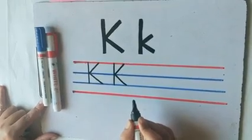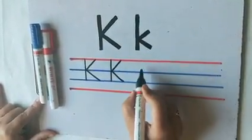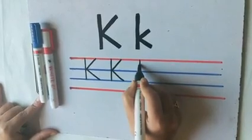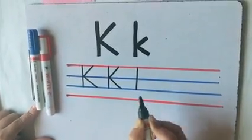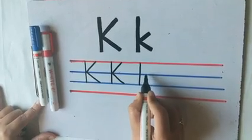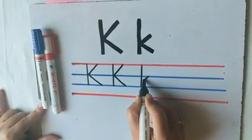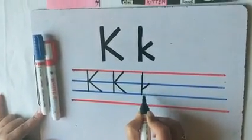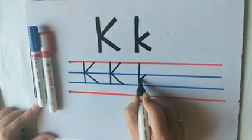Isn't it very easy? Now we will learn how to write small letter K. First we will make a standing line from the first red line to the second blue line. Then we will make a right slanting line from the first blue line to in between the two blue lines.